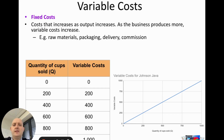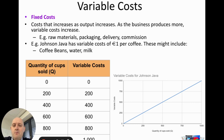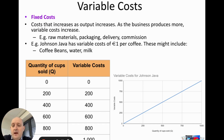Variable costs increase as output increases. For Johnson Java, the variable cost is €1 per coffee. This includes coffee beans, milk, and water. Whether cups are a variable cost depends on context — if using paper cups, yes, there's a cost per cup; if using reusable cups, that cost may not apply, though washing-up liquid might increase slightly.